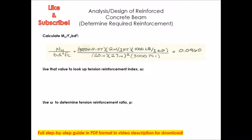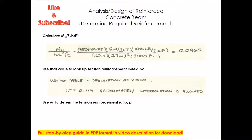From that value, you can go to the table I've provided in the description to determine your tension reinforcement index ω. This value directly relates to the reinforcement ratio required based on the moment your beam is trying to resist. I've calculated this table in an Excel sheet available in the video description — you can download it and see exactly how it was built. This table is also available in the Structural Engineering Reference Manual by PPI.